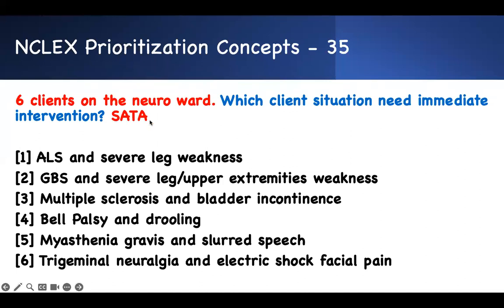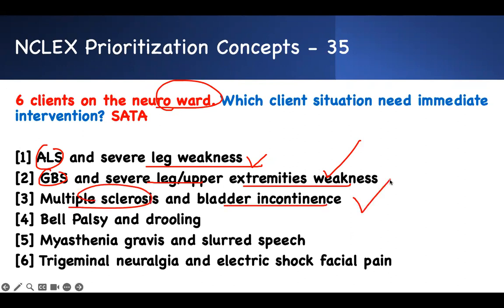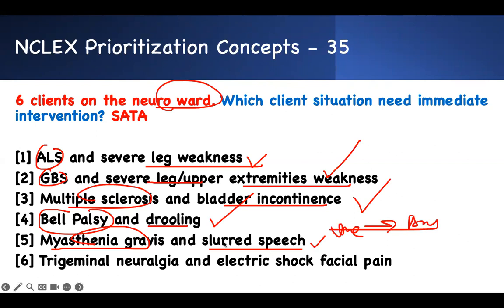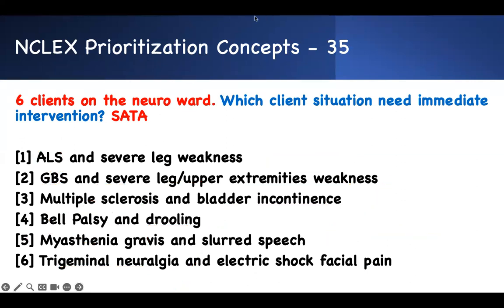Question 35 — six clients on neuro unit, which needs intervention? ALS with severe leg weakness — expected. Multiple sclerosis with bladder incontinence — expected. Bell's palsy with drooling — one side of face is paralyzed, drooling is normal. Myasthenia gravis with slurred speech — voice change indicates airway issue; this is a B-SHARP moment — intervene. Trigeminal neuralgia with electrical shock facial pain — expected. Client 4 (myasthenia gravis with slurred speech) is the only answer.